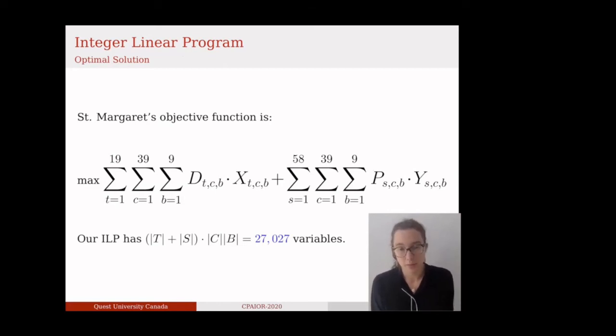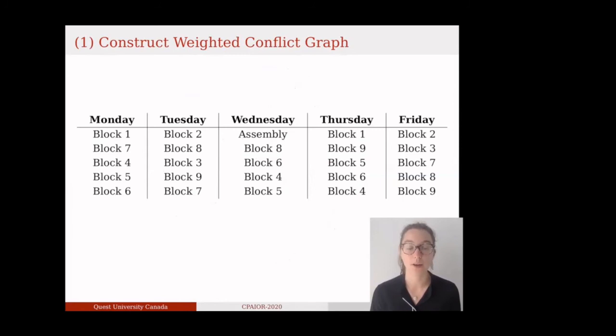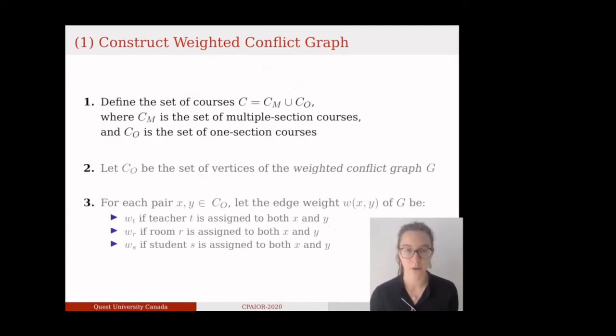However, when the problem size is larger, like in most universities, simplifications are required to ensure tractability. This provides the epistemological justification for bundling. Course bundling comprises of three steps. Step one, construct a weighted conflict graph. Of the 31 section courses, some are short courses scheduled in blocks one, two, and three, with two weekly classes. And the remaining courses are long, offered in blocks four, five, six, seven, eight, and nine, with three weekly classes. Now construct the conflict graph as follows. Let C be the set of courses. C is equal to the union of multiple section courses, CM, and one section courses, CO. Consider CO, and let it be the set of vertices of a weighted conflict graph, called G.